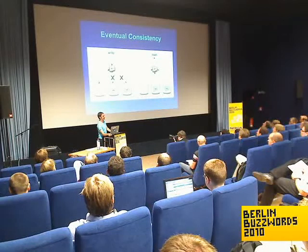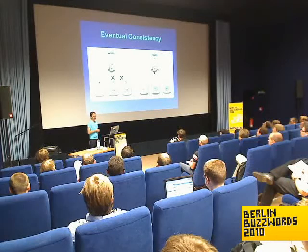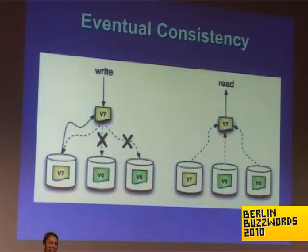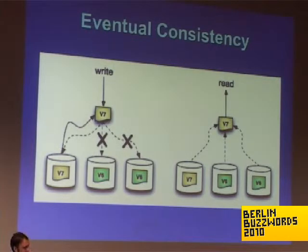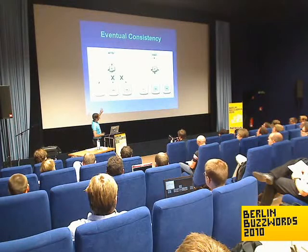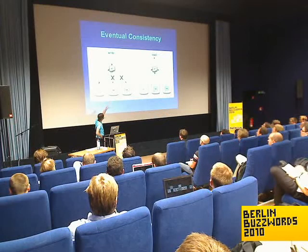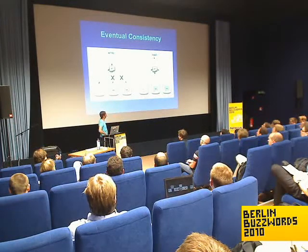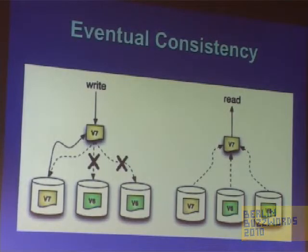Dynamo is a database system developed by Amazon to handle their shopping cart. One of the key requirements was very high write availability — the last thing they wanted was for a customer to try and place an order and not be able to because of a server error. So they developed this eventual consistency system, which basically allows you to kick off writes to all the replicas and return a success when you've only heard back from a subset of them. This can lead to some problems where some of the updates didn't make it to some of the replicas, so they employ a system called read repair, where they read from some number of the replicas and essentially repair the data on the read end.